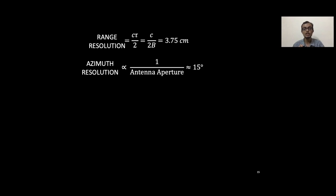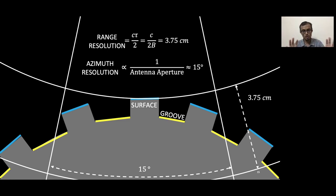The 4 gigahertz of bandwidth gives us 3.75 centimeter range resolution. So our objective is to use this and somehow resolve the surface and the groove along any one of these axes. But to put things in perspective, the surface and the groove are only separated by 2 mm to 20 mm along the range axis and just 2 degrees along the azimuth axis. This is the challenge we aim to address.